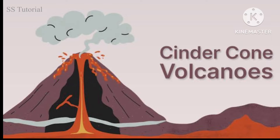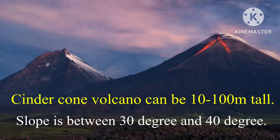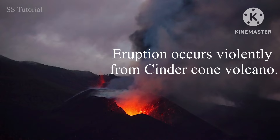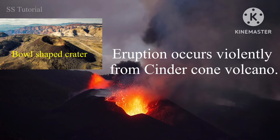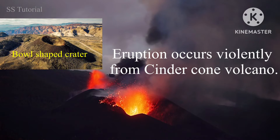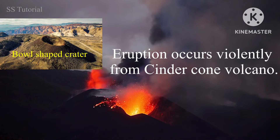A cinder cone volcano is a steep conical shaped hill made of loose pyroclastic fragments and highly viscous lava. It can be up to 100 meters tall and slopes are between 30 and 40 degrees. Generally eruptions occur violently from these types of volcanoes, which is why most cinder cones have a bowl-shaped crater at the summit.